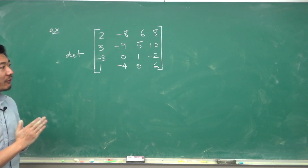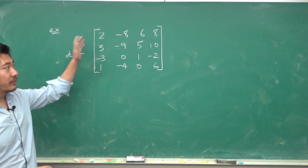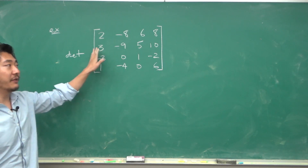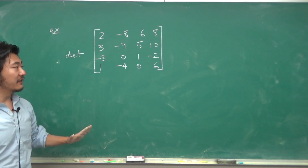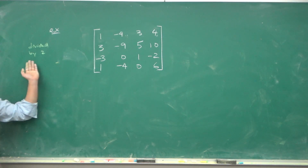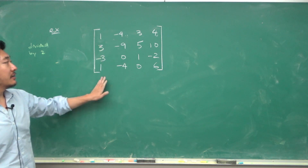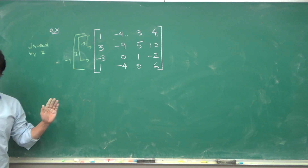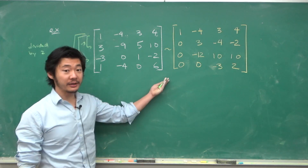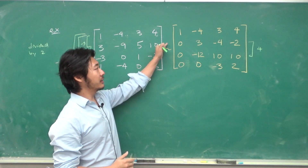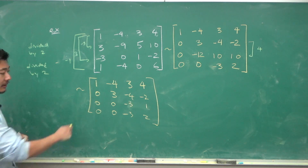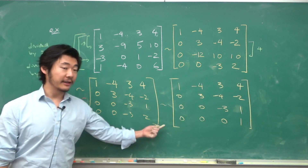Suppose we want to compute the determinant of a 4 by 4 matrix. Using cofactor expansion directly would require computing four 3 by 3 determinants, which takes a lot of time. Instead, let's row reduce first. We divide a row by 2 — keeping track of that scaling — then use row additions (which don't affect the determinant) to zero out entries, getting the matrix into upper triangular form. We divide another row by 2 as well, and after adding a multiple of one row into another, we arrive at an upper triangular matrix.